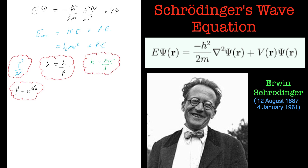So we've got these four equations that we're going to need. I'm just going to quickly take the second derivative of this equation. So the first derivative with respect to x: dψ/dx equals ik e to the ikx.